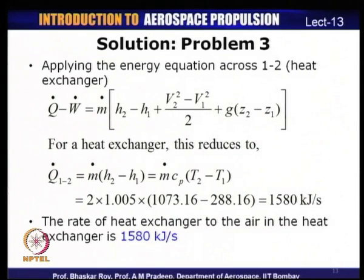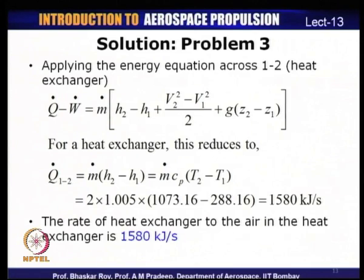Converting temperatures: T2 = 800 + 273.16 = 1073.16 K, T1 = 15 + 273.16 = 288.16 K. Substituting: Q̇ = 2 × 1.005 × (1073.16 − 288.16) = 1580 kJ/s. So the heat exchanger receives heat at a rate of 1580 kilowatts.